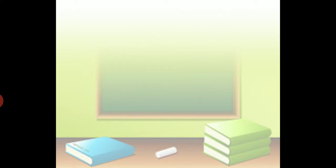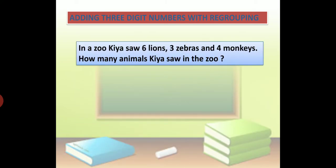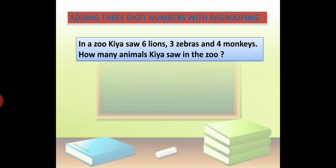In a zoo, Kia saw 6 lions, 3 zebras, and 4 monkeys. How many animals did Kia see in the zoo?